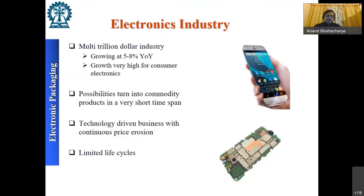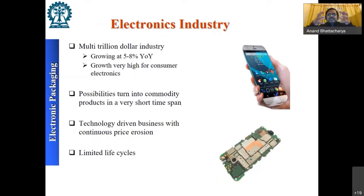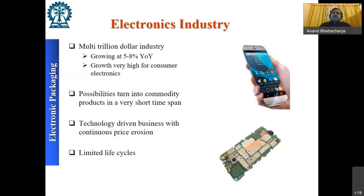Consumer electronics have very limited life cycles — most of us keep cell phones for only two to three years, laptops maybe four years. Compare that to automotive or aviation electronics where product life cycles are much longer. Therefore, the packaging required for consumer electronics will be different from avionics, defense, oil and gas, etc. Electronics has really pervaded our daily life and we have all become deeply dependent on electronic gadgets.